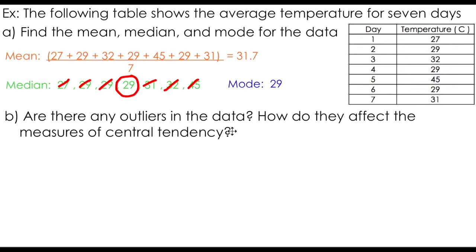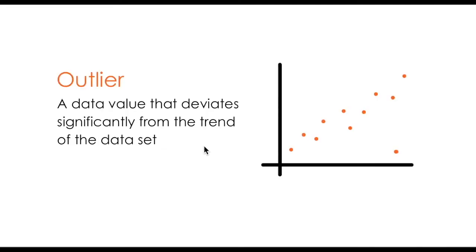Another interesting question we can ask is whether or not there are any outliers in the data. We can define an outlier as a data value that deviates significantly from the trend of the data set. If you take a look at this scatter plot here, and you know anything about lines of best fit, I can draw a straight line through my set of data such that there are an even number of points above and below in order to model the overall trend of the data.